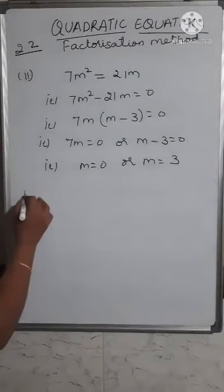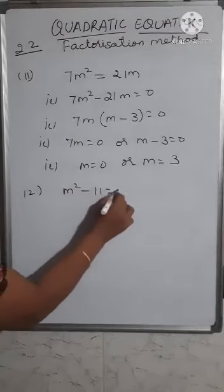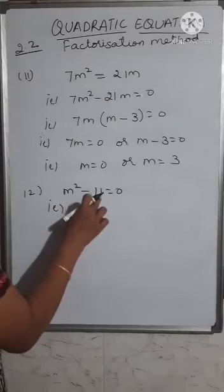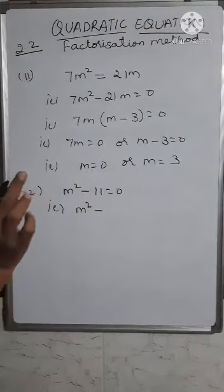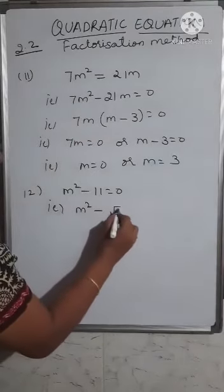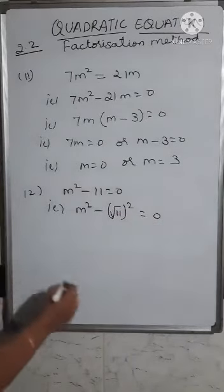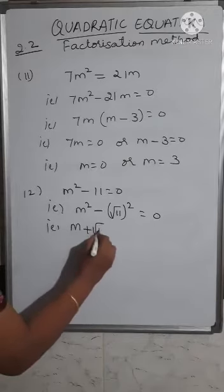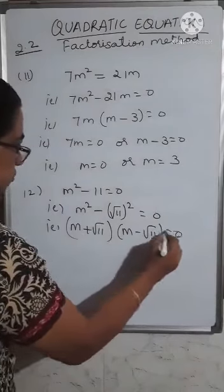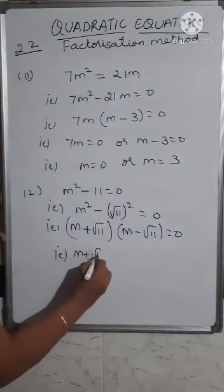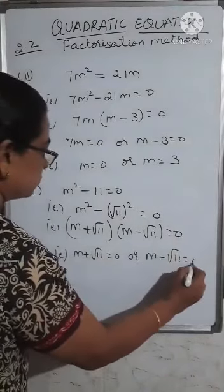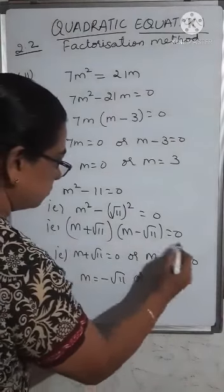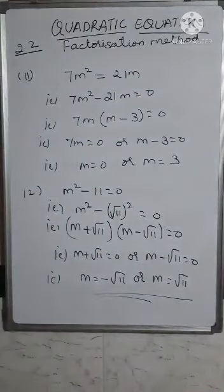Suppose you have m² - 11 = 0. This is not a perfect square, so write it as m² - (√11)² = 0. Using the a² - b² formula: (m + √11)(m - √11) = 0. So m + √11 = 0 or m - √11 = 0, giving m = -√11 or m = √11. This is how you work when the number is not a perfect square.